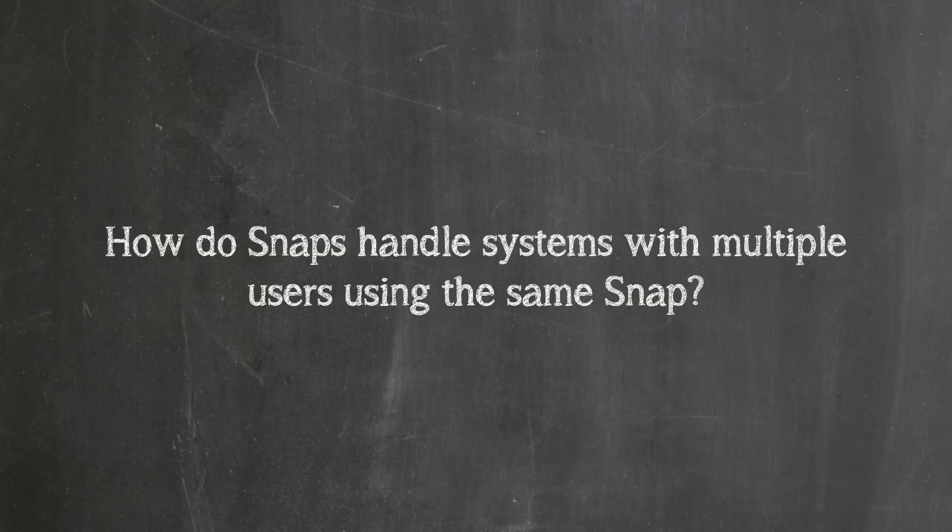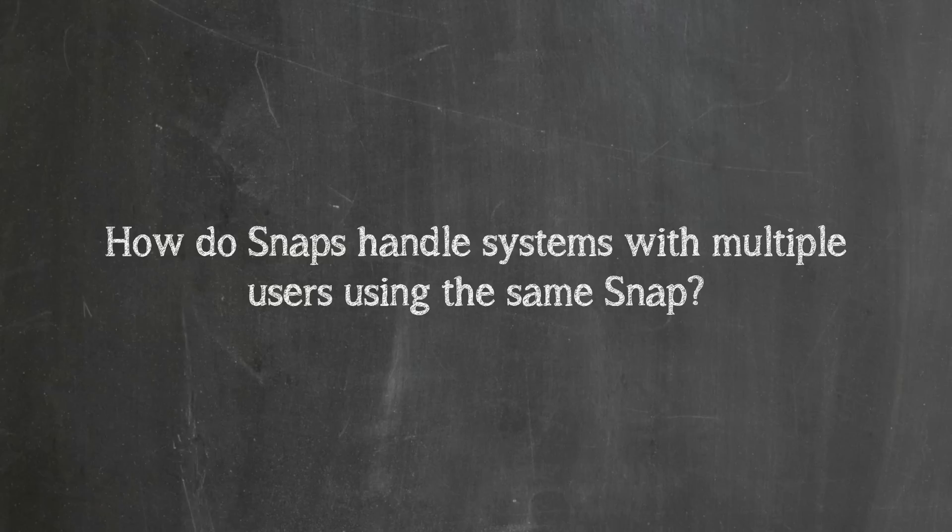How do snaps handle systems with multiple users using the same snap? The snap would be installed globally for all users once, and each user will have their own user data stored separately.